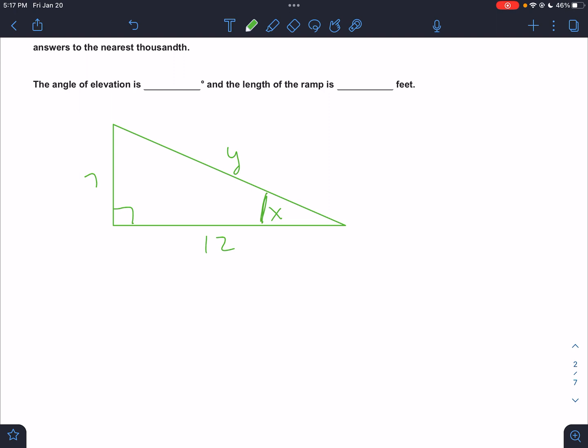Angle of elevation, if I'm looking for the angle, I know it's going to be inverse something. This is opposite adjacent. So I know that x is going to equal inverse tangent, opposite over adjacent. So when I type that in, inverse tangent 7 over 12, I get 30.256. So there's the first answer.